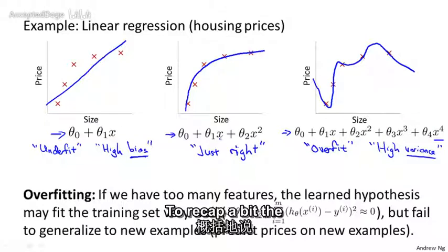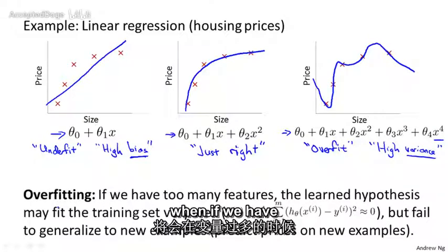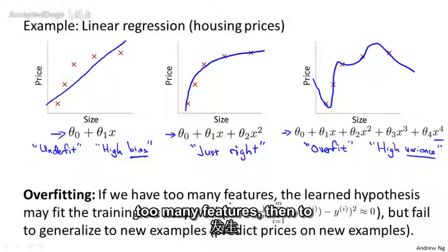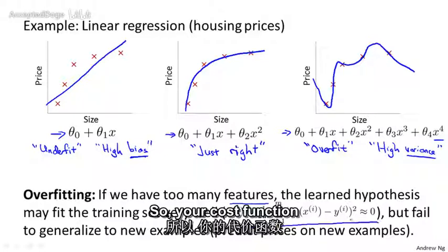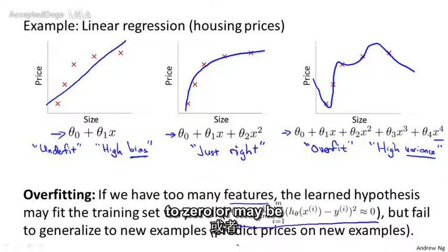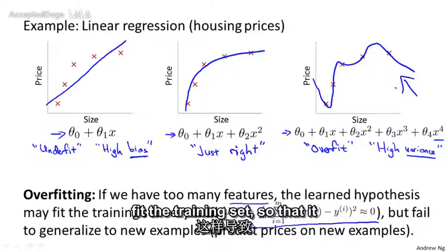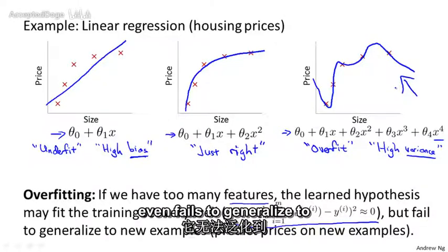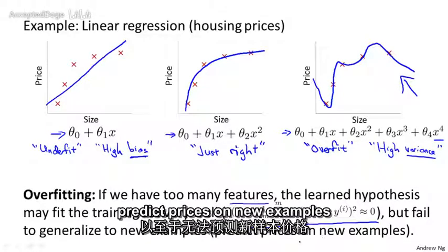To recap a bit, the problem of overfitting comes when, if we have too many features, then the learned hypothesis may fit the training set very well. So your cost function may actually be very close to zero, maybe even zero exactly, but you may then end up with a curve like this that tries too hard to fit the training set, so that it even fails to generalize to new examples, and it fails to predict prices on new examples well.